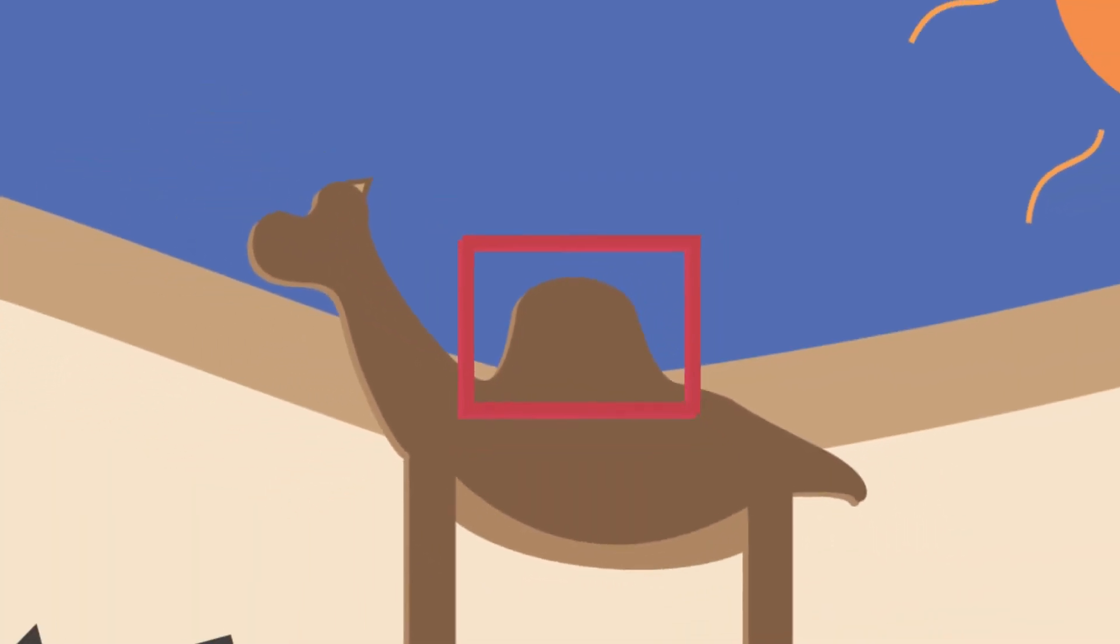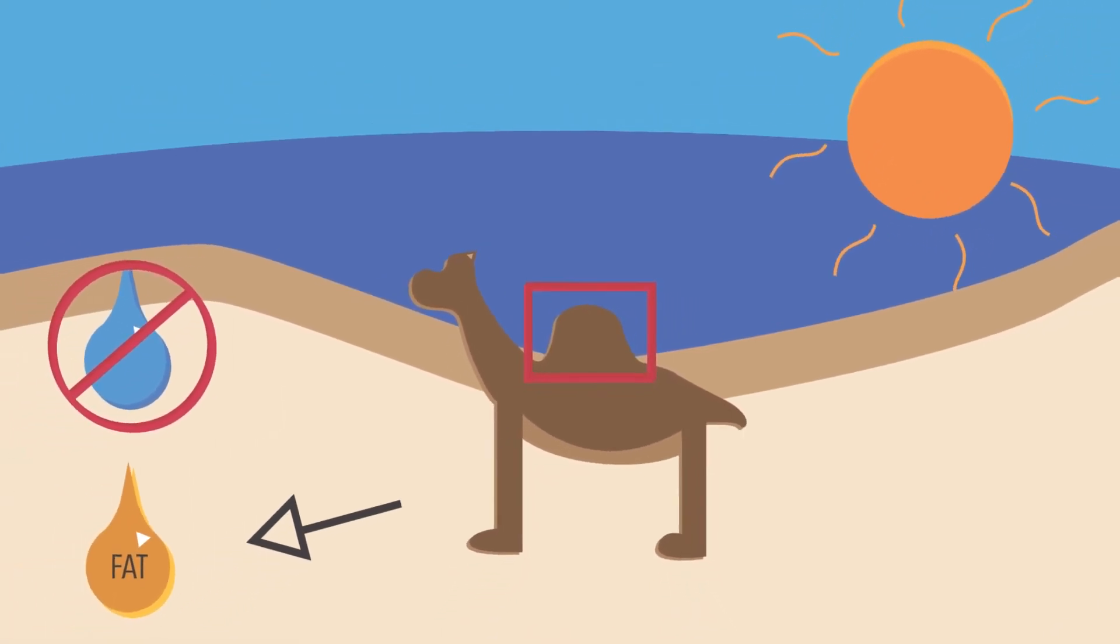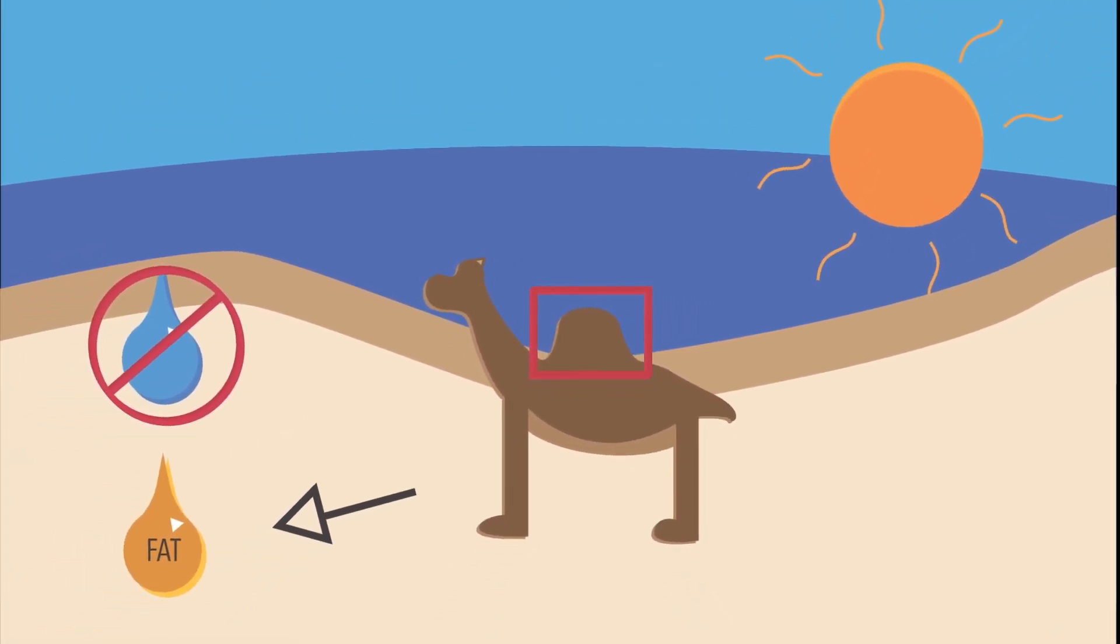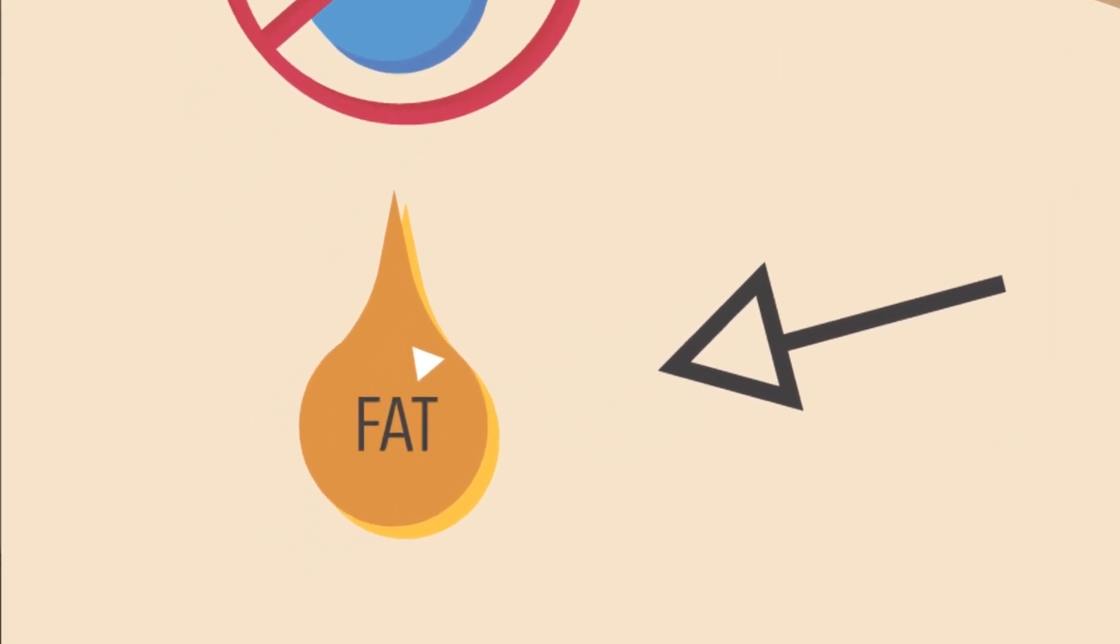A common misconception surrounding camels is that their humps are filled with water, but that's actually not the case. Camel humps are actually filled with fat, which provides them with energy.